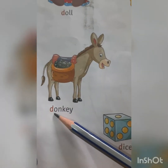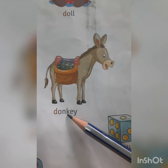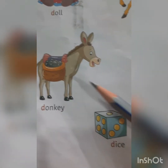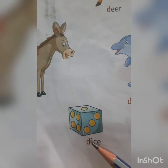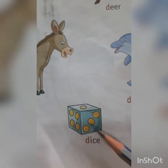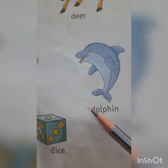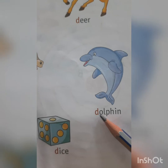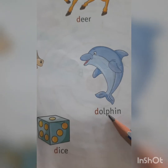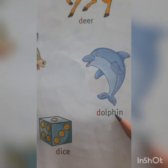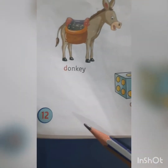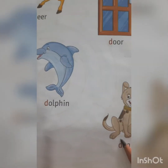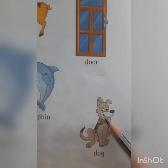D-O-N-K-E-Y. Donkey. D-I-C-E. Dice. D-O-L-P-H-I-N. Dolphin. D-O-G. Dog.